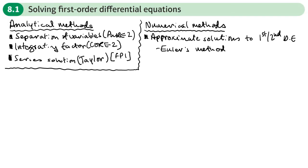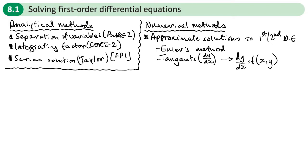Euler's method is all about using tangents. We're recognizing that dy/dx is the gradient of the tangent, so if we've got a first-order differential equation dy/dx = f(x, y), we know what the gradients are, and we're going to use that to help us find a solution to the differential equation.